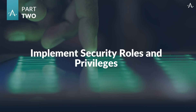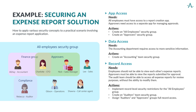Now let's look at an example: securing an expense report solution. In an expense approval scenario, all employees must be able to submit their expense reports, requiring them to have access to the app used for creating these reports. Similarly, approvers need access to a separate app for managing approvals. We will create an All Employees security group that has access to the expense reporting app and its associated data. Additionally, an Approver security group will be set up to access the approvals app. The accounting department may require access to more sensitive data such as employees' bank details for processing reimbursements, so we will establish an Accounting Team security group, which will be the only group with access to employee banking information.